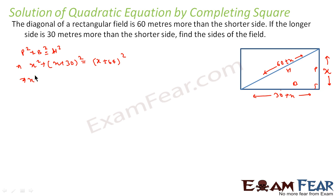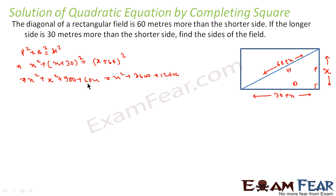So we have x² + (x + 30)² = (x + 60)². Expanding: x² + x² + 900 + 60x = x² + 3600 + 120x. Using the formula (x + y)² = x² + 2xy + y², this gives x² + 30² + 60x on the left, and x² + 60² + 120x on the right. The x² terms cancel, and after rearranging I get the quadratic equation equal to 0.